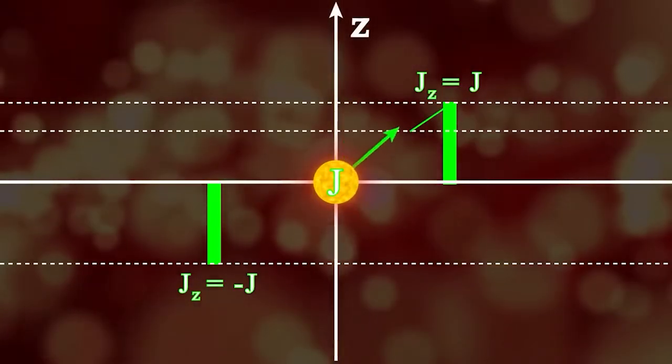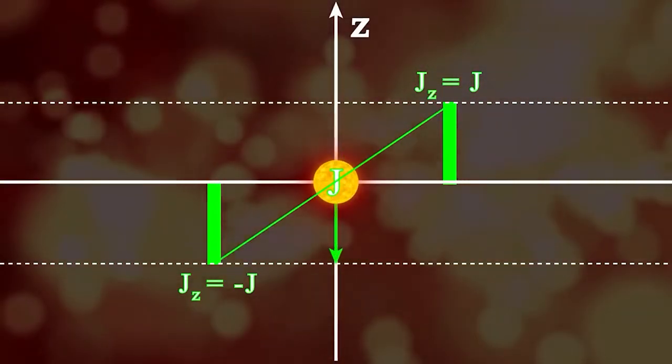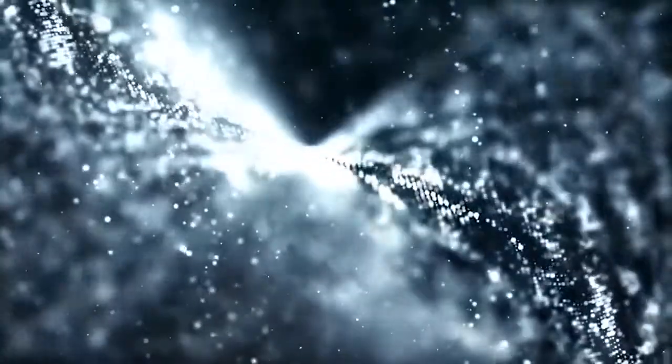If we were dealing with classical mechanics, the spin projection within this range could take any value. However, in the quantum world things work differently. Here physical quantities change discreetly, in quantized portions rather than continuously.